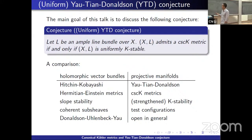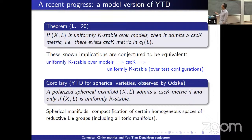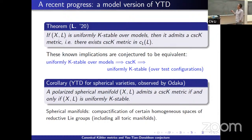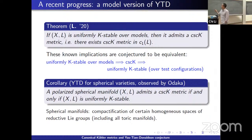The Hitchin-Kobayashi correspondence was completed by Donaldson, Uhlenbeck, and Yau, but the YTD conjecture for general polarized manifolds is still open. Recently we have made some progress: we showed that if (X,L) is uniformly K-stable over models, then it admits a cscK metric. This uniform K-stability over models is a stronger stability condition, so it implies existence of cscK metrics. We also know cscK metrics imply uniform K-stability over test configurations. It is conjectured that all these conditions are equivalent.